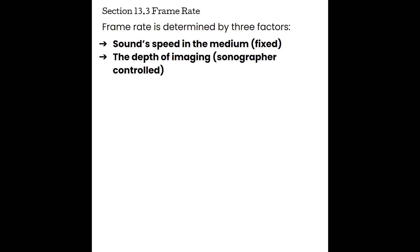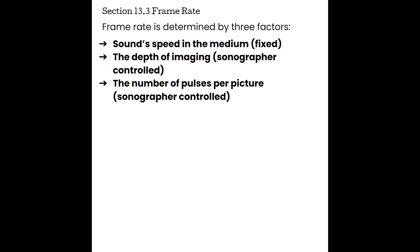Sound speed in the medium relates to frame rate because once a pulse is sent, it can only travel so fast to the maximum imaging depth and those echoes can only travel so fast back to the transducer before the next pulse is sent. The second factor is the depth of imaging, which the sonographer can control. We have the option to image at 5, 8, 20 centimeters, or whatever we need. When we increase the depth, we increase the time for that pulse to reach the maximum depth and return. The longer that takes, the fewer frames that can be created. The third factor is the number of pulses per picture, also sonographer-controlled.